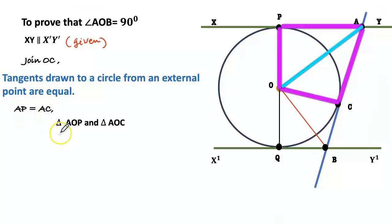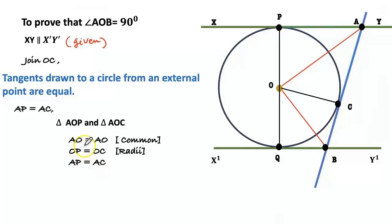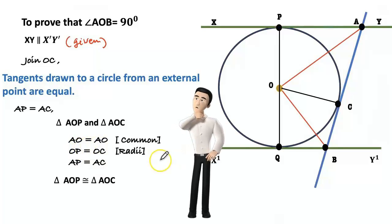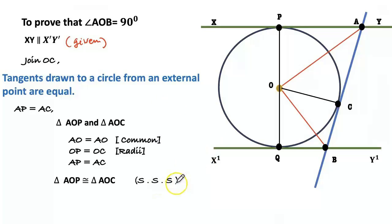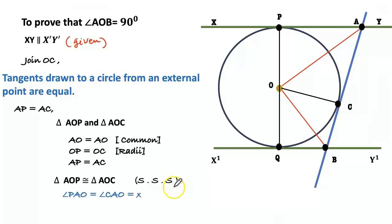Consider the triangle AOP and AOC. We can see AO equals AO common, OP equals OC radii, AP equals AC tangents. So all three sides are equal to the corresponding sides. Triangle AOP congruent to triangle AOC by SSS. So we can say angle PAO and angle CAO are equal, corresponding parts of congruent triangles, equal to x.